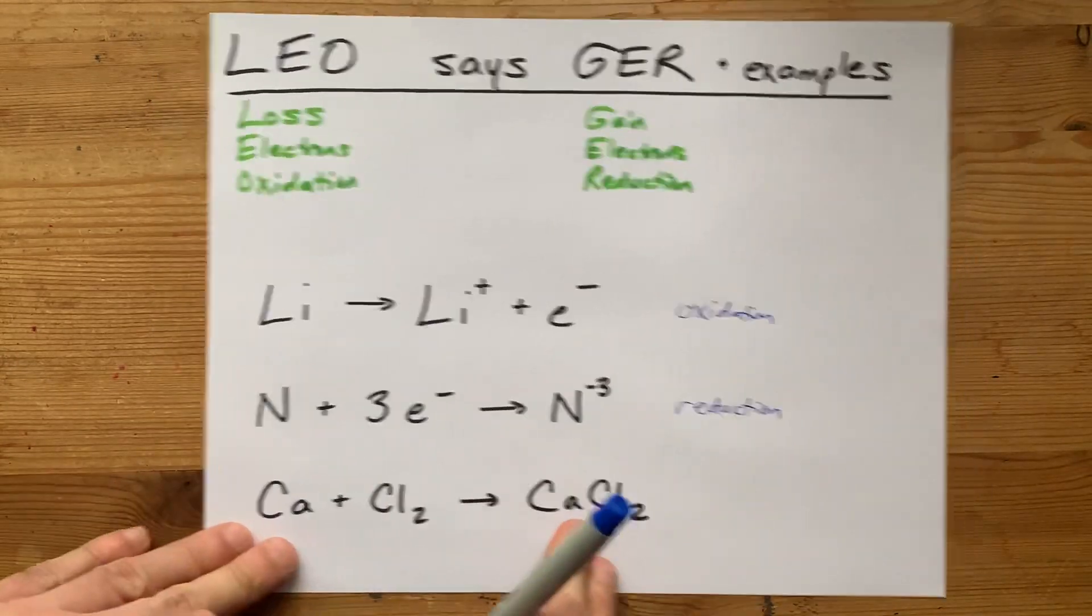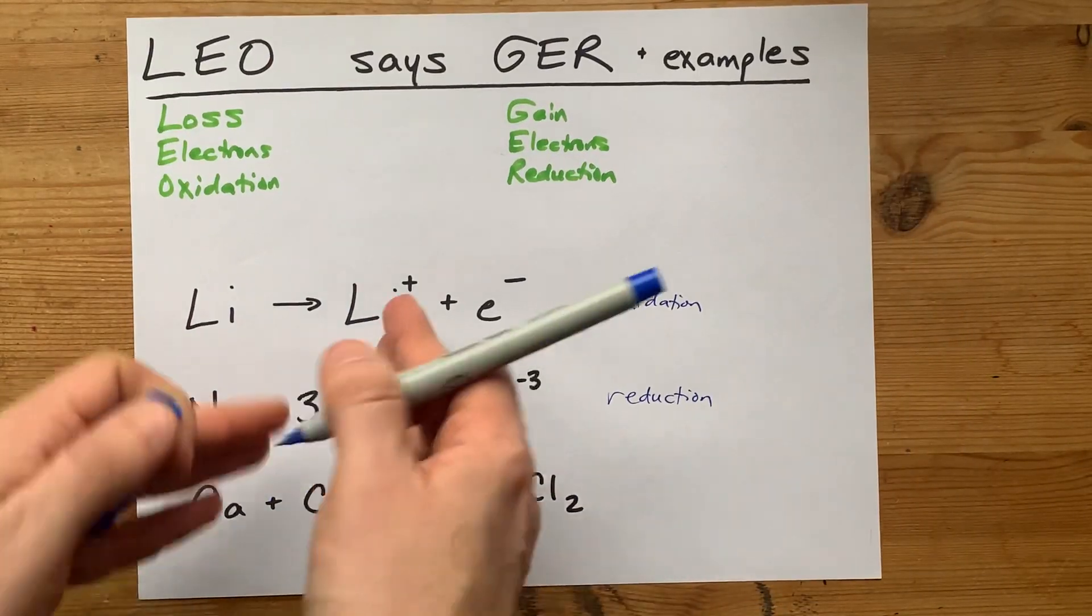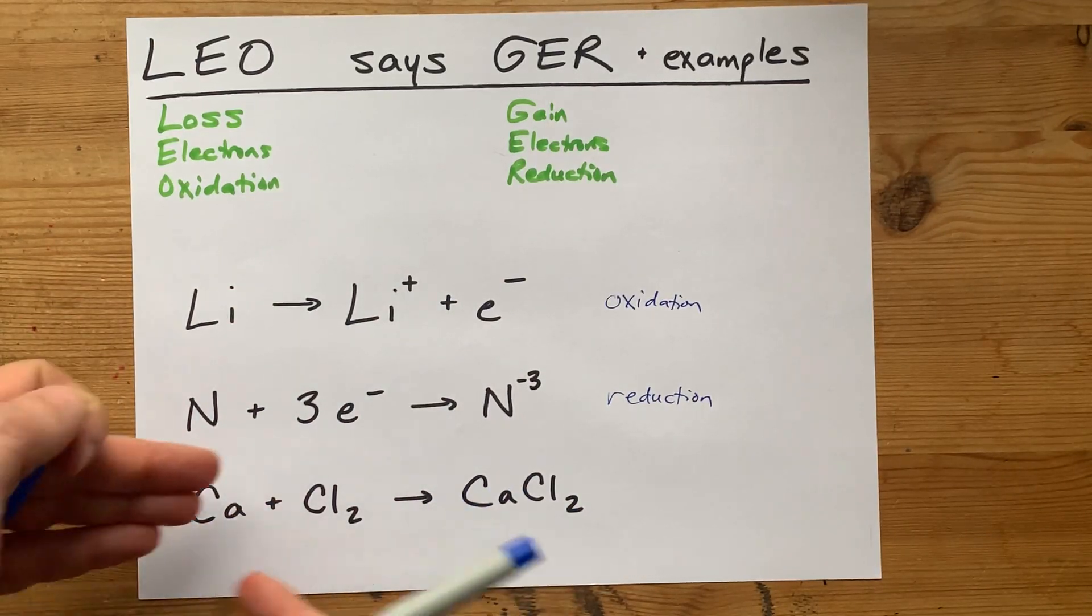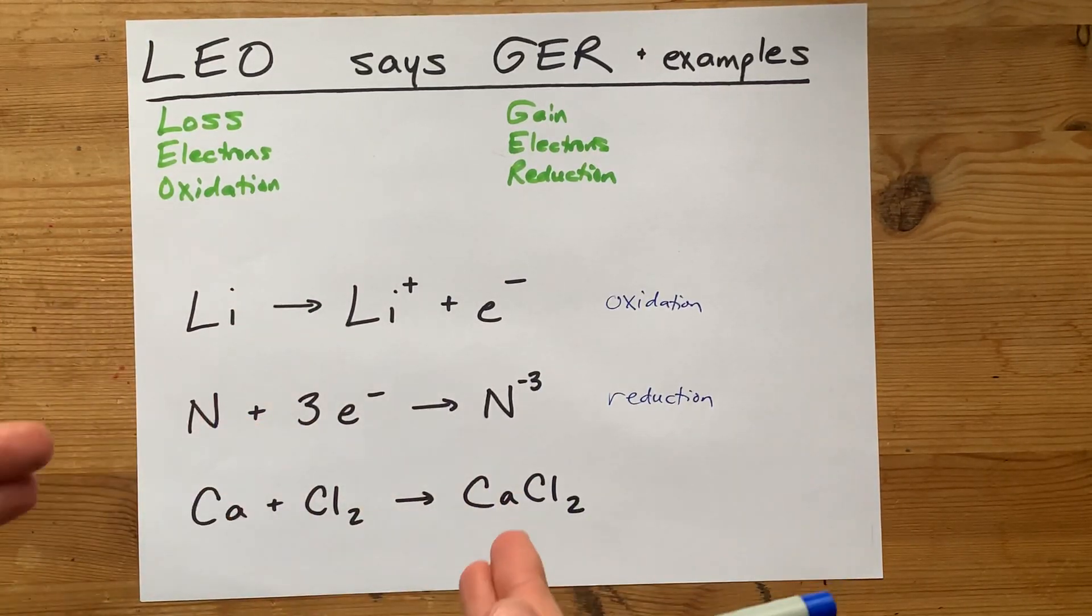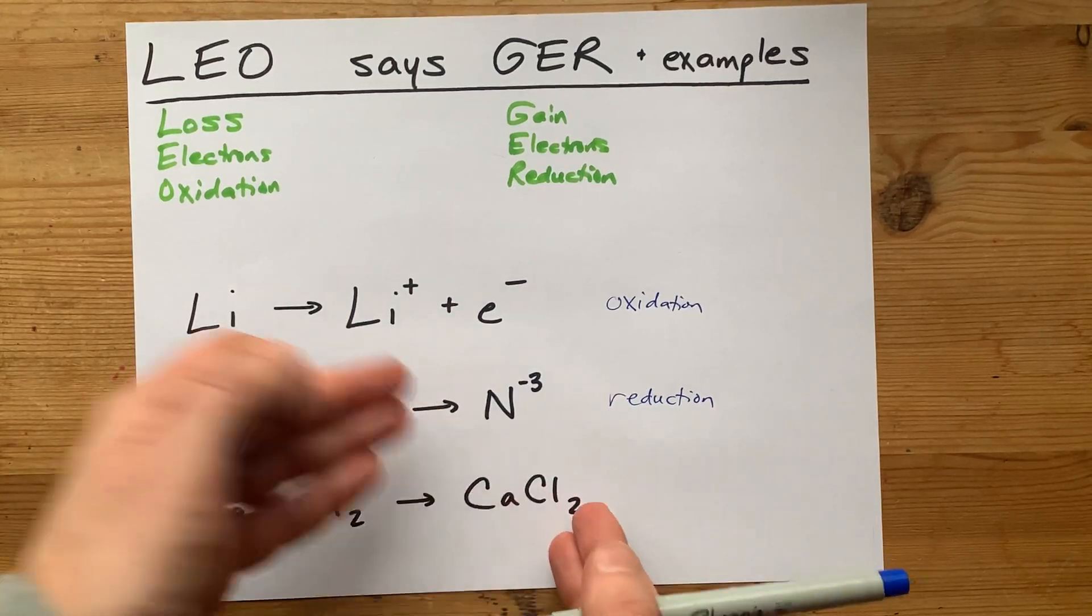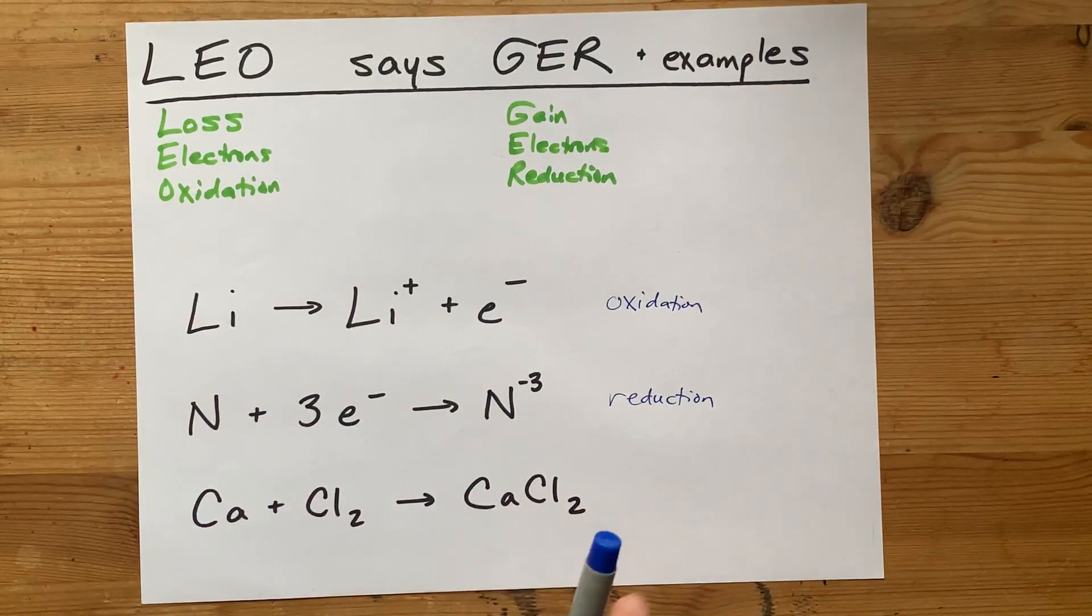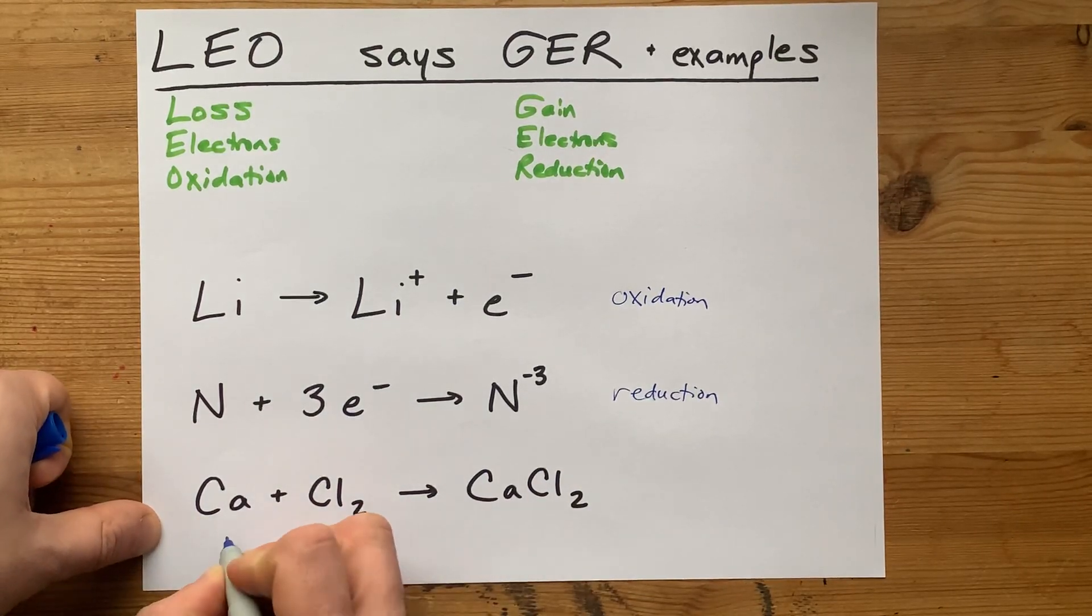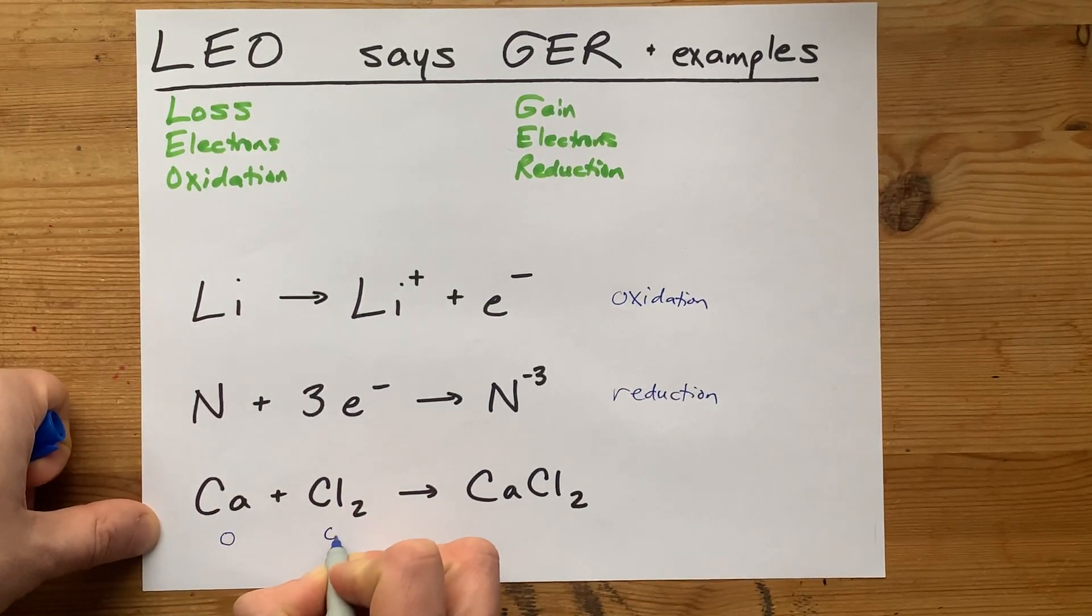Now, here I have a regular or a complete chemical reaction, not just a half reaction. I got calcium, the pure element, reacting with chlorine, also the pure element, to make calcium chloride the ionic compound. Now, we usually say that pure elements have an oxidation number of zero.